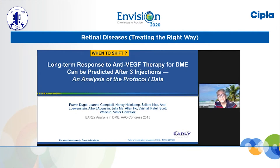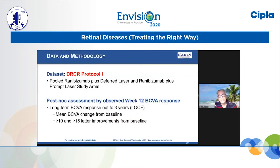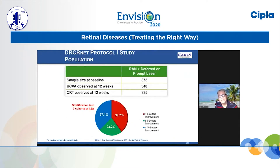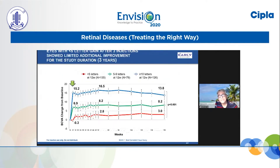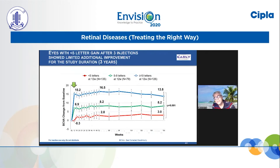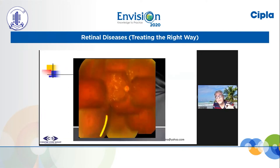This study gave a lot of light on when to switch. This was a study done in India by Praveen Dugel. The result was: if you keep injecting and patients are not improving after two injections — as shown by the red line in the lower graph — in such patients there should be an early shift to Ozurdex or steroids.